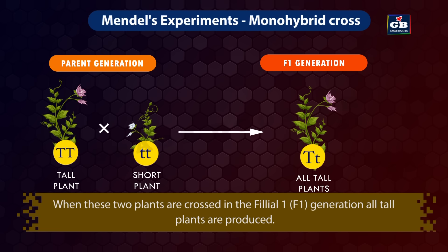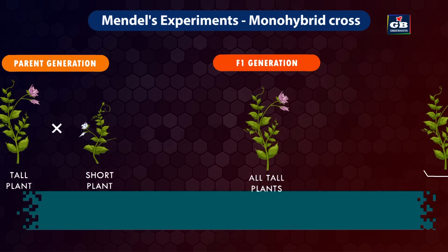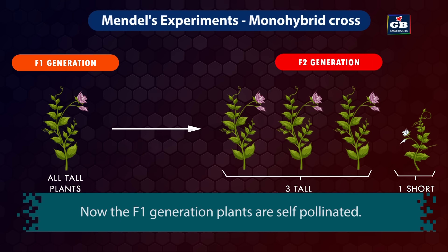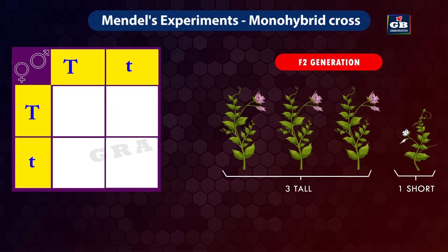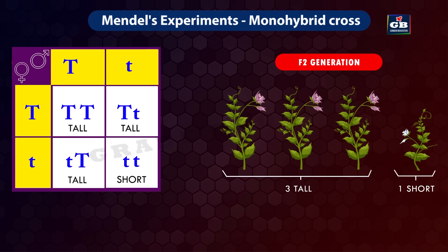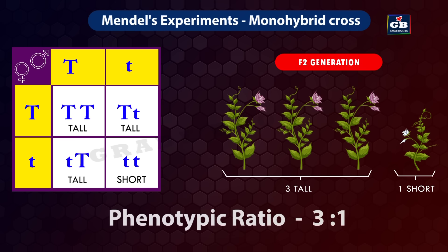The F1 generation plants were then self-pollinated. Using a Punnett square, the possible combinations of the F2 generation are TT, Tt, tT, and tt. Out of these four combinations, three are tall and one is short. So the phenotypic ratio of the F2 generation is 3:1.